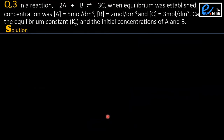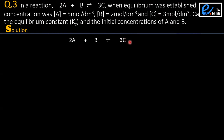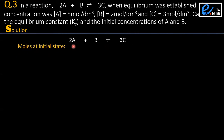Question number 3: in the reaction 2A plus B giving 3C, when equilibrium was established, the concentration of A is 5 moles per dm³, B is 2 moles per dm³, and C is 3 moles per dm³. We must calculate the equilibrium constant Kc and the initial concentration of A and B. We write the equation 2A plus B giving 3C, and assume initial moles A and B. Since the reaction has not started, moles of product are zero.